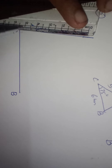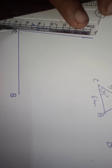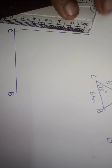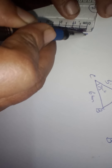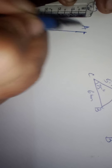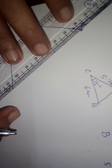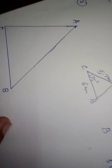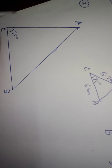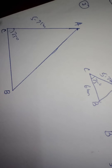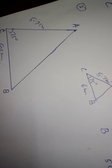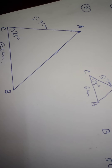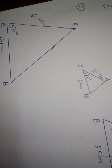AC is 5.7 cm — check 5.7 on your scale and mark it along the 75 degree line. This point is A. Now join A and B. This is 75 degrees, AC is 5.7 cm, and BC is 6 cm. There is one more question in this section that you have to do yourself.